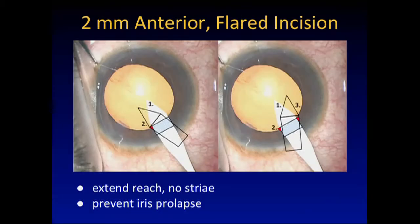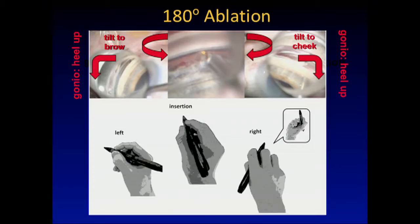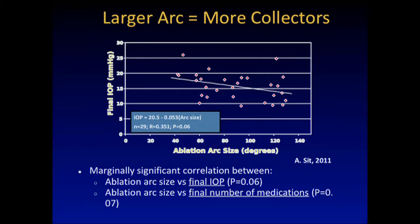You have to identify the meshwork and the canal. Second, the technique — how can you get better reach and prevent iris prolapse? You have to make an anterior incision that is not your cataract incision, and you have to flare it. That sounds like a sub-ideal incision that potentially will leak, but that's what you need for trabectome surgery. More is more in this case. Aim for 180-degree ablation — more ablation means increasing your odds of tapping into these drainage segments.